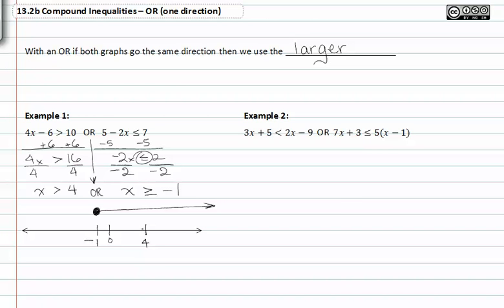If we graph x > 4, it would not include four, so it would be an open dot also heading to the right.